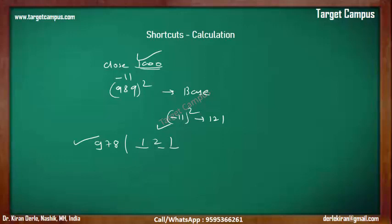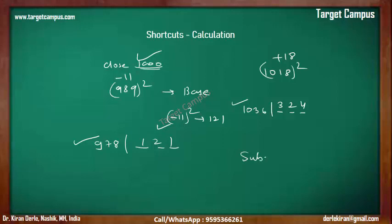Same approach for 1018 squared. This is plus 18 from 1000 — three digits here. The square of plus 18 is 324. And 1018 plus 18 gives 1036. So the answer is 1036324. Amazing — practice this, all the best, and thank you for watching. Do subscribe for more such useful content.